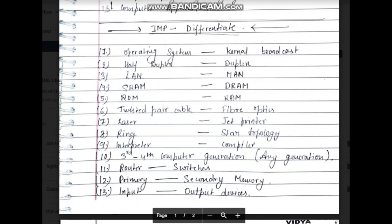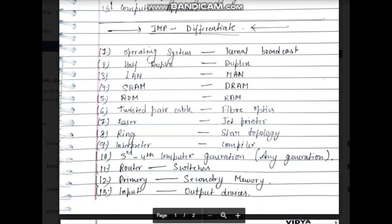Twisted pair cable, fiber optics, laser jet printing — you need to know all the types of printing. Topology is also very important: ring topology, star topology, and bus topology. Bus topology may not be explicitly written in the book but I need to confirm. These are all important items.